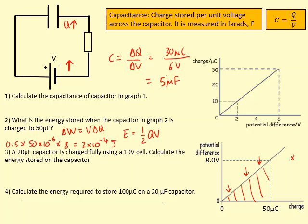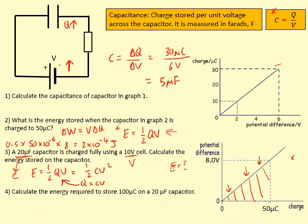In question three, the capacitance is given — don't forget that's capacitance with symbol C, not charge. The voltage is also given and we want to figure out the energy. We can't use E = ½QV because we don't have Q. So we combine Q = CV with E = ½QV to get E = ½CV². Putting in the numbers using the given capacitance should give 1×10⁻³ joules.